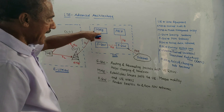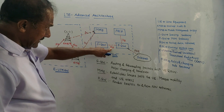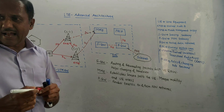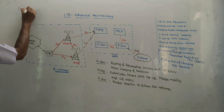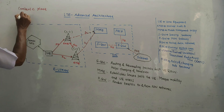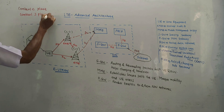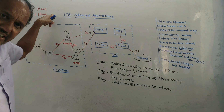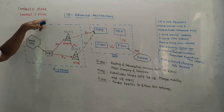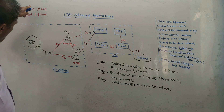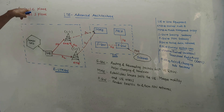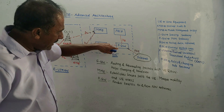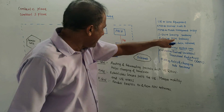S1 basically connects eNB with MME, the mobile management entity. Interface S5 is used for the control C-plane and control S-plane. The control C-plane manages communication sessions, while the control S-plane manages communication traffic. Interface S7, as shown in this diagram, provides the interface between PGW, the PDN gateway, and PCRF, the policy and charging rule functions.